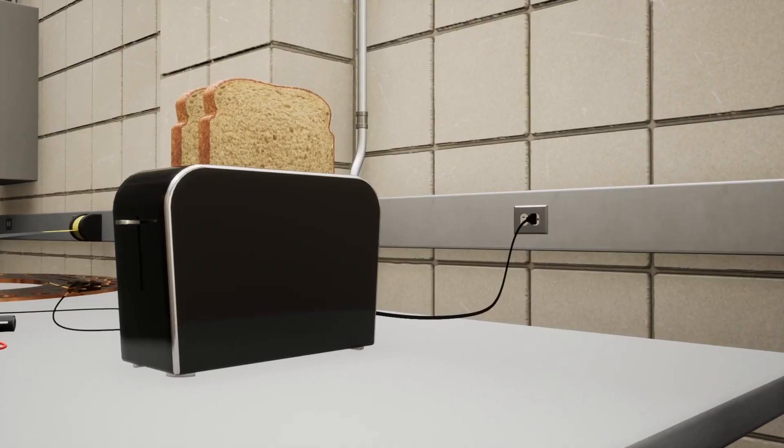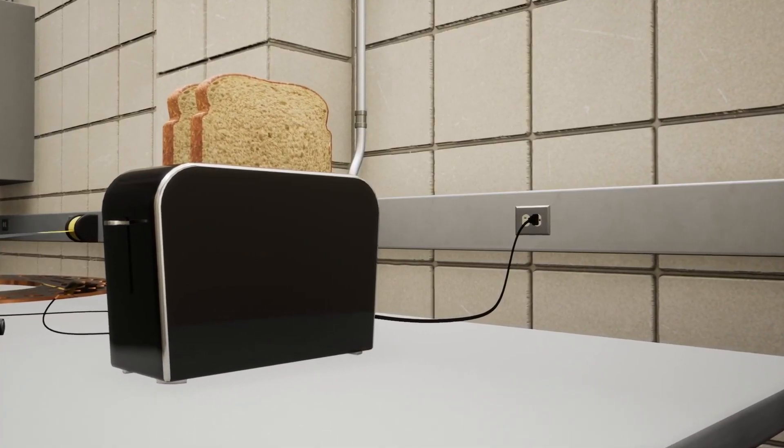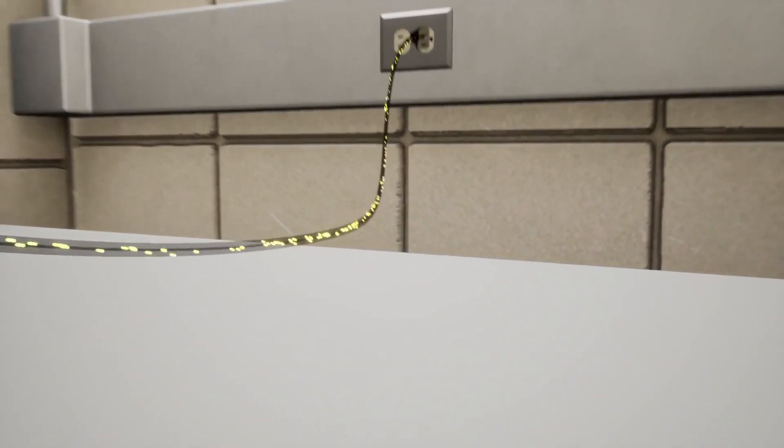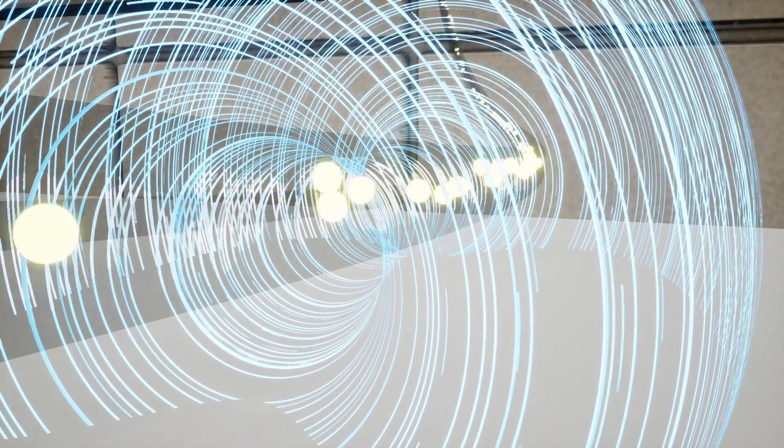You might not think of a toaster as a magnet, but anywhere you have a moving charge, you have a magnet, even in a toaster. That's because moving electrons create a magnetic field.